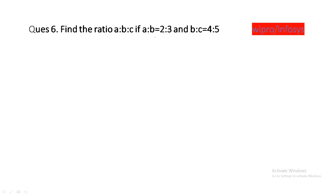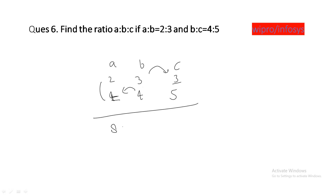Find the ratio A:B:C if A:B is 2:3 and B:C is 4:5. There is a short trick: write A, B, C. A:B is 2:3 and B:C is 4:5. The blank positions are filled so that 3 and 4 occupy the B slot. Then multiply: A = 4×2 = 8, B = 4×3 = 12, C = 5×3 = 15. So A:B:C = 8:12:15.